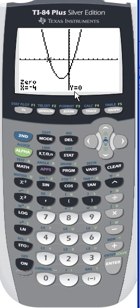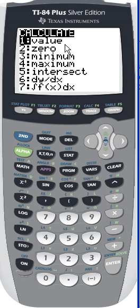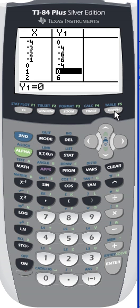So we found our zero three different ways using the value feature and the zero feature, both of which are located here in the second trace menu, second calculate. We found those there. Or we could use our third technique using our table of values by using second and then graph. So those are three different techniques for finding zeros using your graphing calculator.